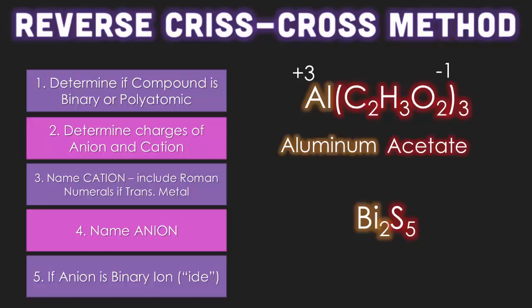The cation always goes first. So let's name that one first. So it's bismuth, but when you look on your periodic table, bismuth can either be a plus three or a plus five. But if you do the reverse criss-cross method, what's the charge of bismuth then? If you take the five from the S and go backwards, that means that bismuth is using the positive five charge. And sulfur, when you look on your periodic table, its only charge is negative two. Reverse criss-cross. Gotcha.